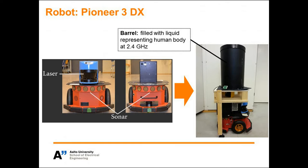Robot can be controlled by an operator, or it can navigate by itself. In order to use the robot in our experiment, we installed a barrel on top of it filled with liquid which represents the electromagnetic properties of human body at 2.4 GHz frequency.